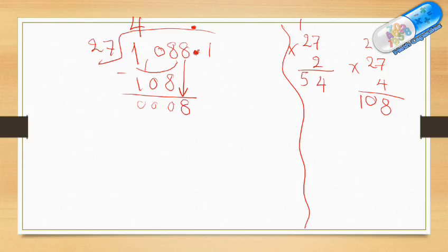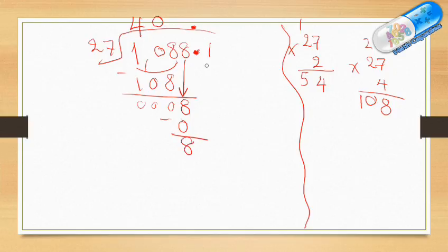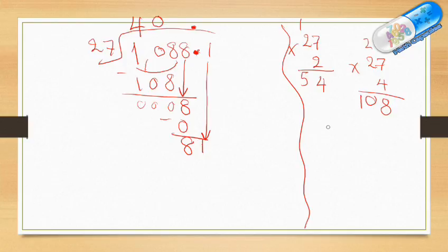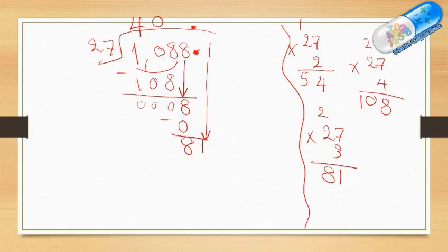Get down the 8, which is still before the decimal point. Any digit brought down must be divided by 27. So 8 divided by 27 — 8 is less than 27, so the answer is 0 here. 0 times 27 is 0, remainder is 8. Now get down the 1, which is after the decimal point, so the answer digit goes after the decimal point. 81 divided by 27 — we know 27 times 3: 7 times 3 is 21, carry 2, 2 times 3 is 6 plus 2 is 8, giving exactly 81. So it's 3. 3 times 27 is 81, remainder 0. The answer is exactly 40.3.